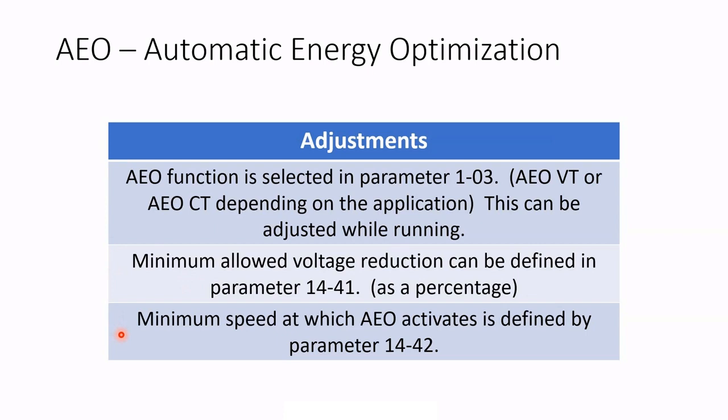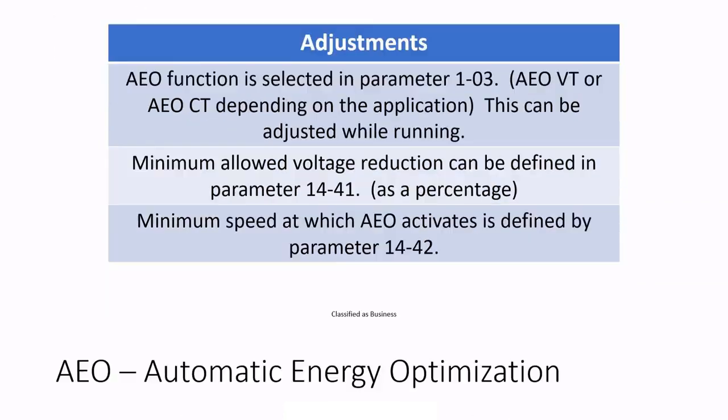Sometimes at very low speeds, the AEO does not act properly. The minimum speed at which AEO activates is defined by parameter 1442, so at lower speeds you can just have the drive run normally.